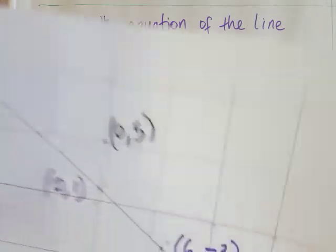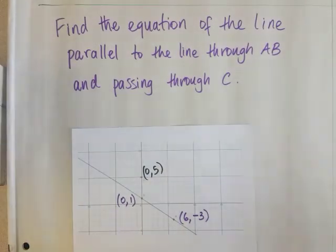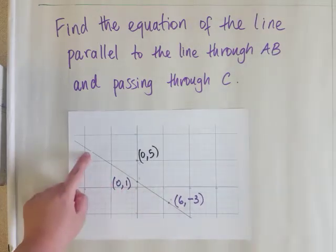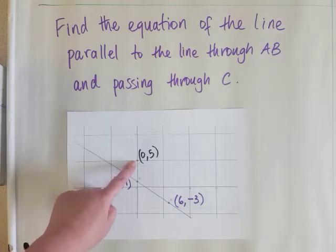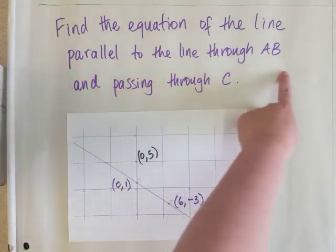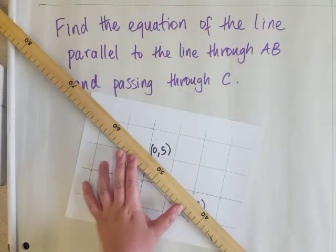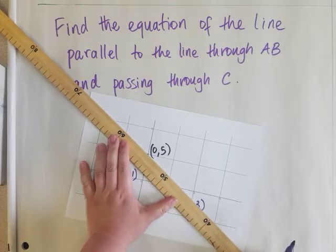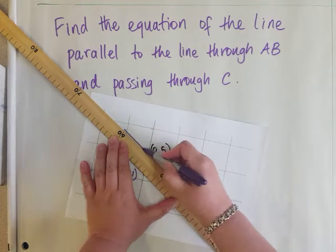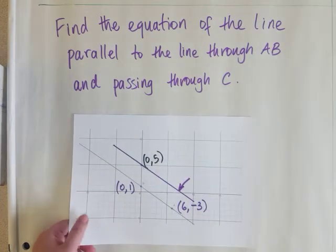So I'll zoom in so you can see it. Basically what I want to find is this line that I'm drawing for you now in purple. It's a line that's parallel to this one, but it cuts through this point C. Parallel to the line through A, B, so parallel to that line, and it passes through C. So I'm going to draw it on. So it has to be parallel and then go through that point C. So that's the line we want to find.